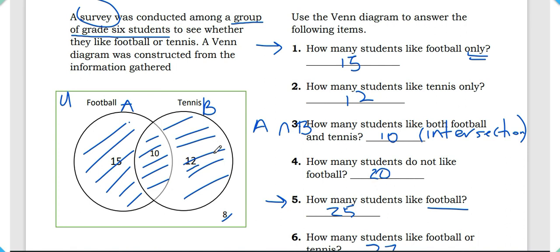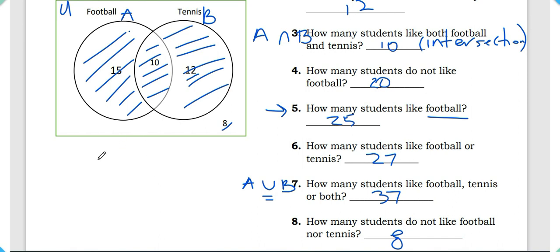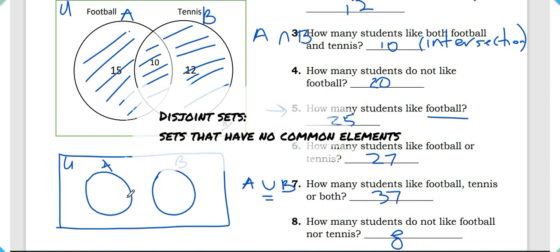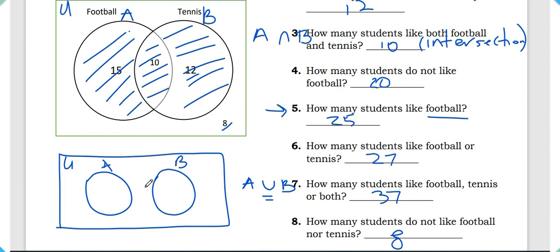We've covered the definition of a set, universal set, subset, intersection, and union, as well as how to answer questions relating to Venn diagrams. We also looked at overlapping sets — in our example the subsets share 10 common elements. Now, if there were no students that liked both football and tennis, our Venn diagram would show two separate, non-overlapping circles. We call this a disjoint set — a set with no overlapping elements.